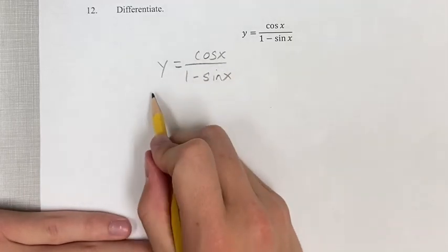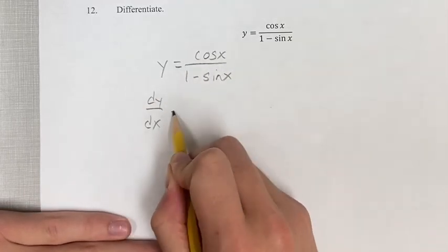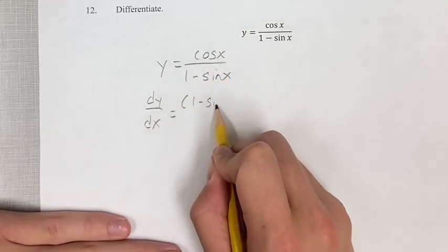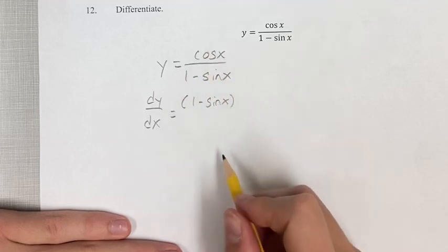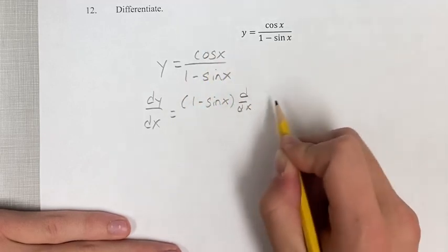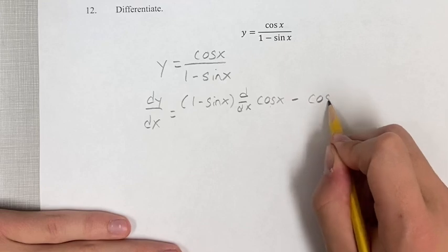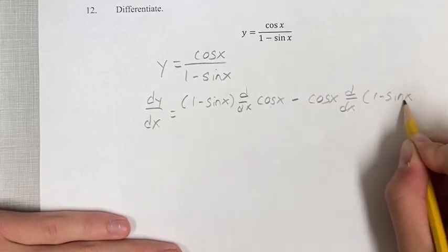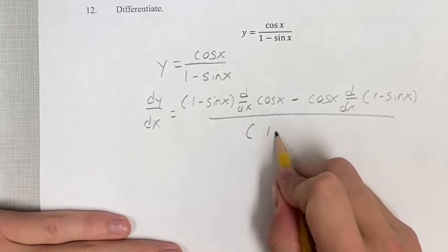So our derivative, dy/dx, is going to be equal to the denominator, 1 minus sine x, times the derivative of the numerator, cosine x, minus the numerator times the derivative of the denominator. This is over the denominator squared.